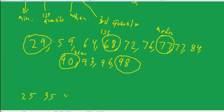25, 35, 45, 55, 65, 75, 85, 95, and then we'll put 100 kind of close here. All right.